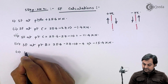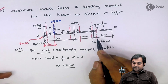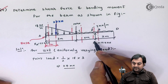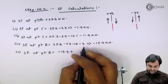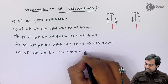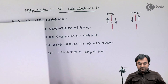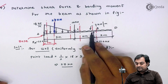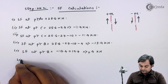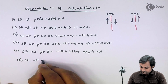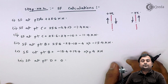Taking the section to the right of B, I add R_B of 19.4 to the existing value of minus 15.4, giving plus 4 kilonewton. Finally, at point D, since it is an overhanging end, the shear force equals zero. I now have all the shear force values and can draw the shear force diagram (SFD).